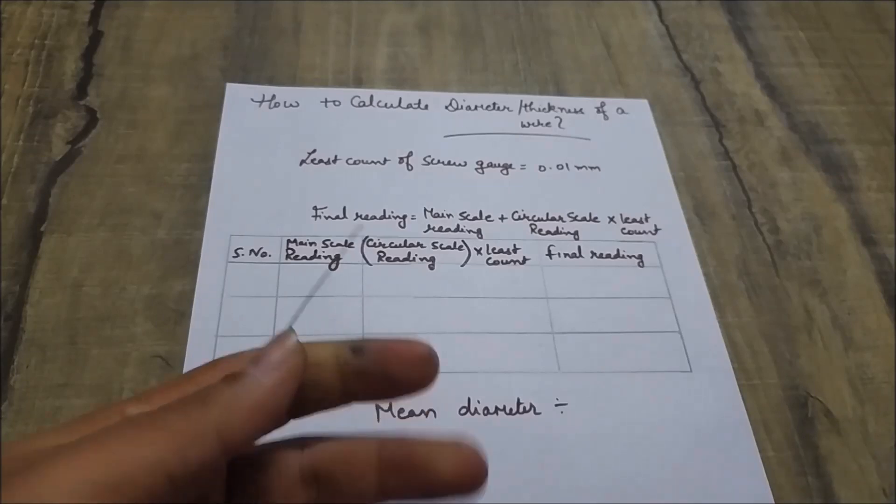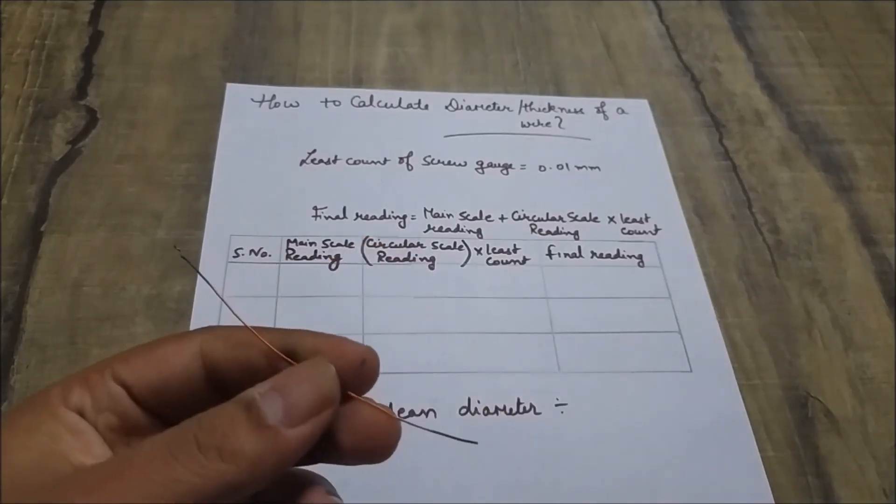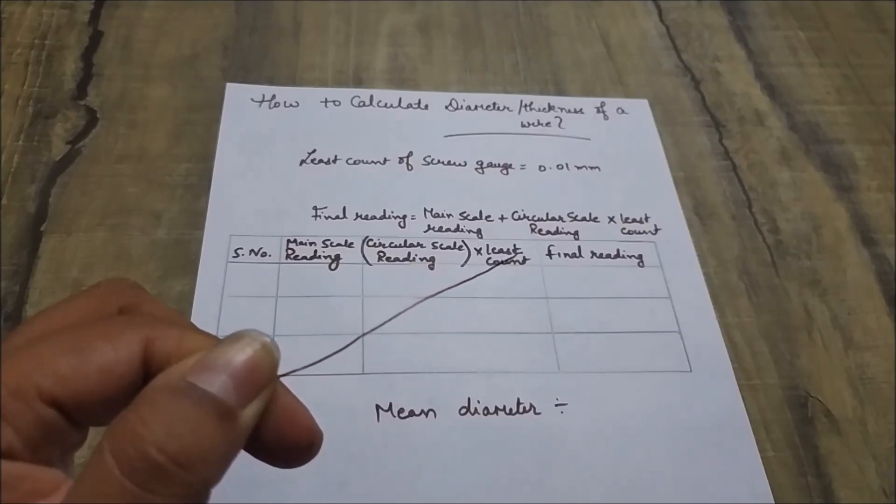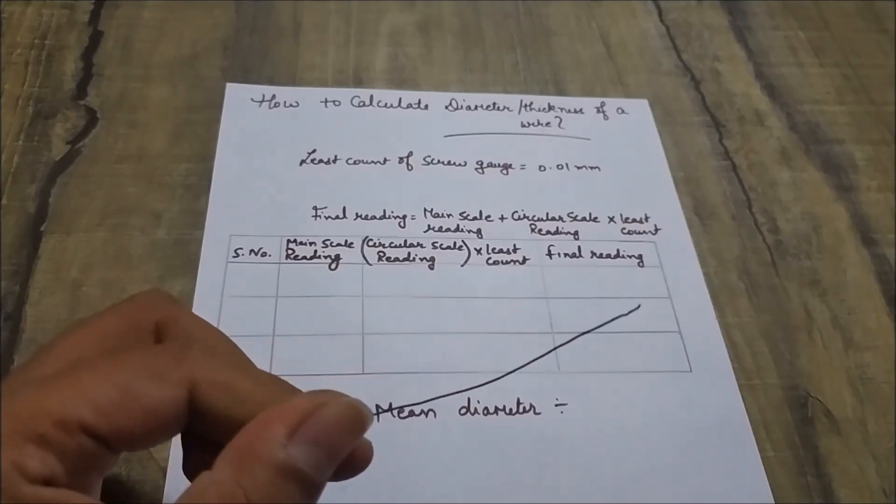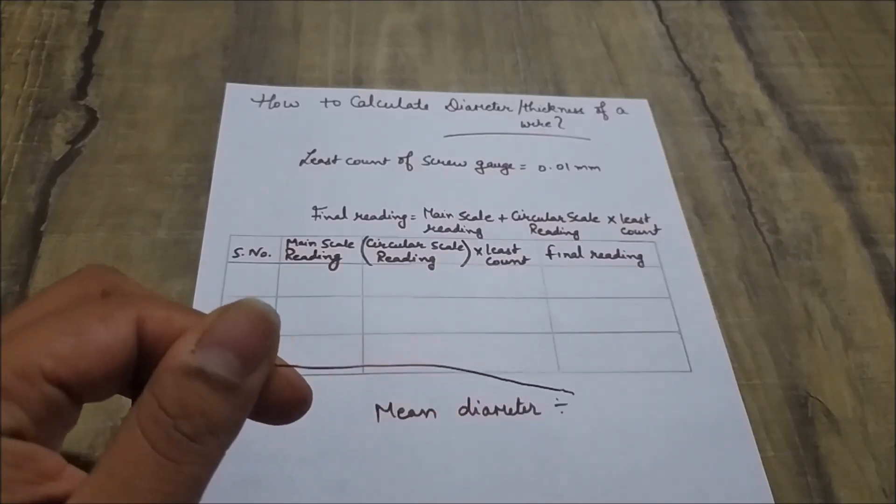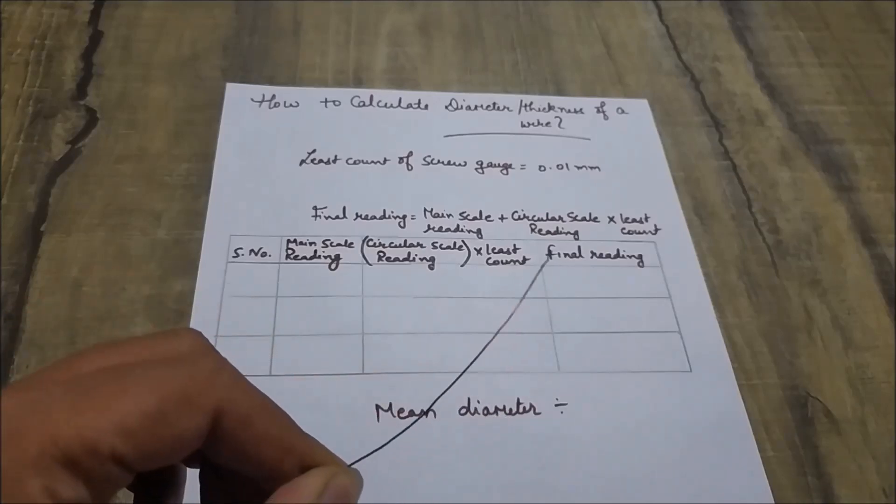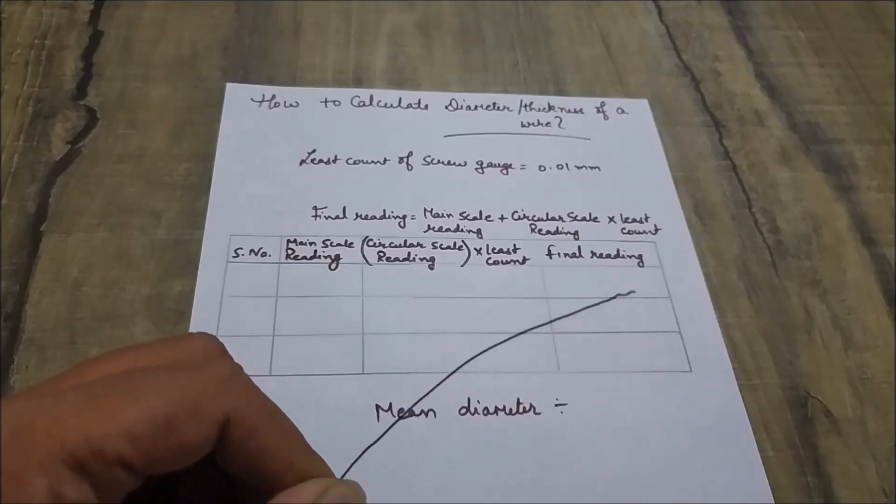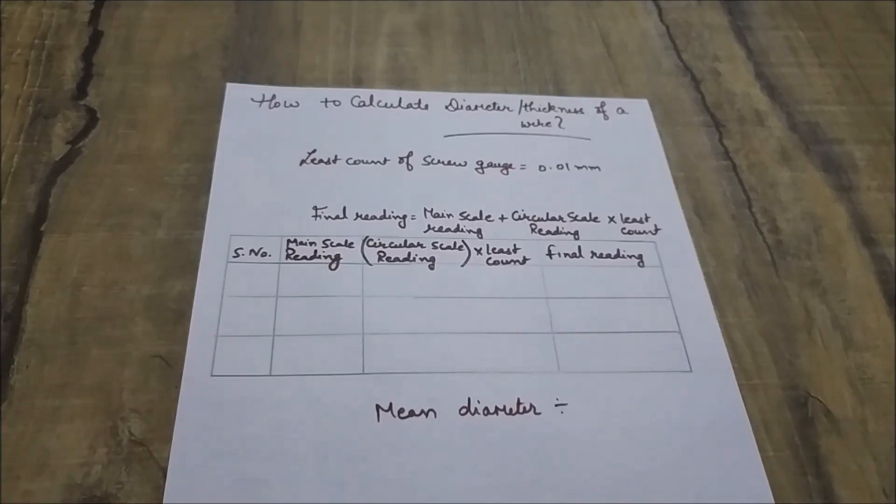Now, why are we not measuring this with the help of vernier calipers? Because we cannot measure this much thickness with the help of vernier calipers. I am not talking about digital vernier caliper. Digital vernier caliper can measure more precise readings. But manually with the help of vernier calipers, we are not able to measure the thickness of this much thin object. So we will use the screw gauge over here.